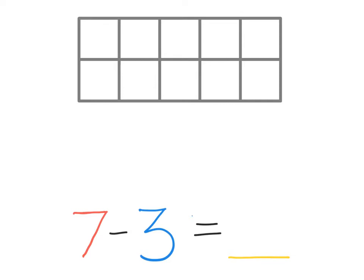First, we draw the 7 red circles or counters inside of the 10 frame. We start with the biggest number or the first number in a number sentence.